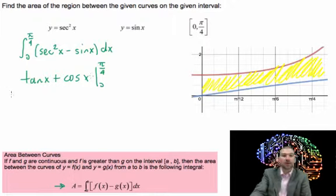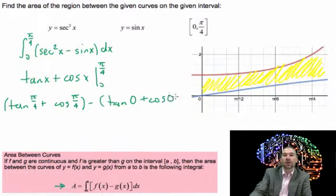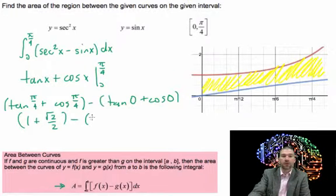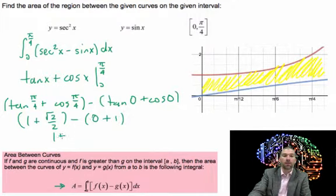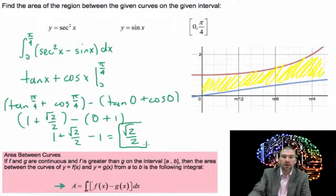So we evaluate those from 0 to pi over 4. Remember, it's stop minus start. We have tangent of pi over 4 plus cosine of pi over 4, minus tangent 0 plus cosine 0. If the question wants an exact answer, the calculator may give you a decimal, so be careful. On the left we get 1 plus square root of 2 over 2. Tangent of 0 is 0, and cosine of 0 is 1. So we end up with 1 plus square root of 2 over 2 minus 1, which gives us square root of 2 over 2.